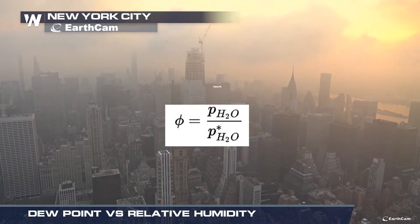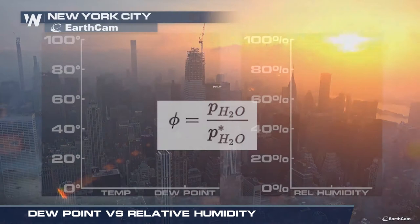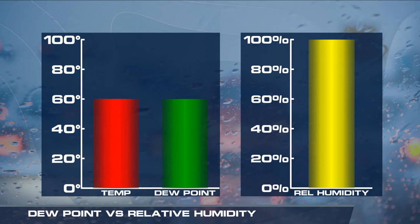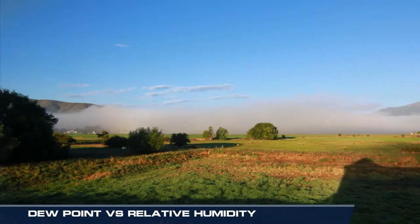For instance, if your air temperature is 60 degrees and the dew point is also 60 degrees, the relative humidity is 100 percent, and it's likely raining or foggy.